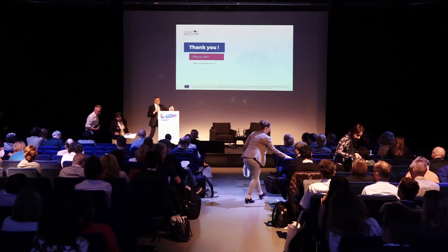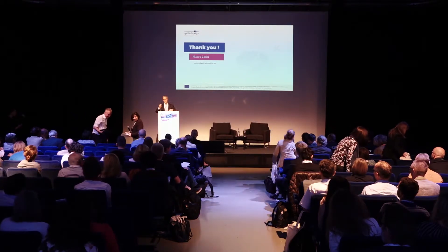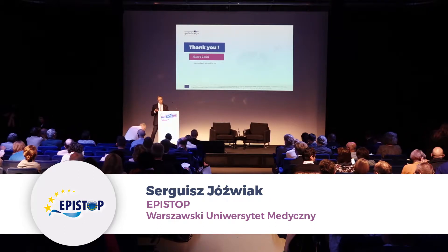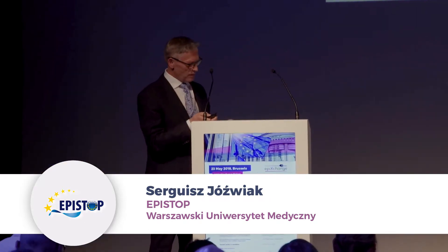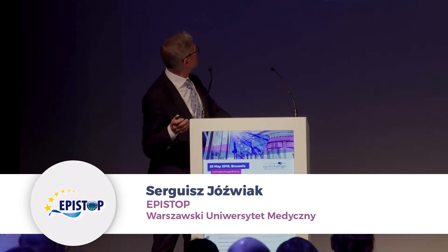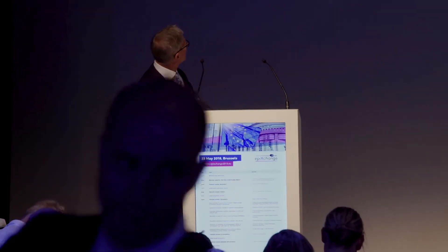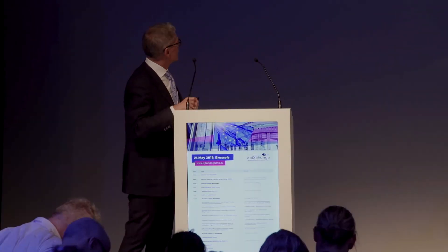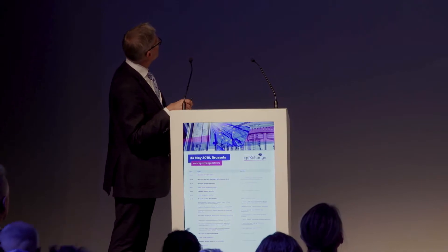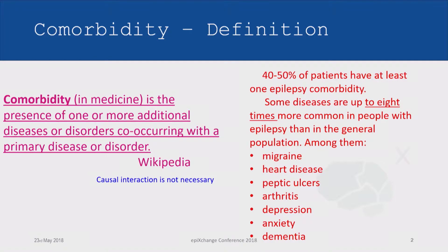I presume all of you are quite tired, so I've just prepared a few slides and we'll go very quickly through them as an introduction to the session. The definition of comorbidity: in medicine, it is the presence of one or more additional diseases or disorders co-occurring with a primary disease or disorder. But it is important that there is no necessary causal interaction between these two events.